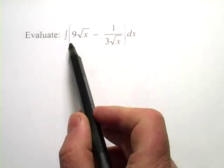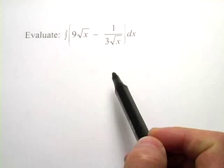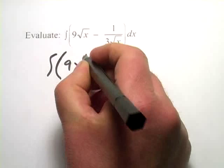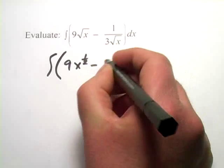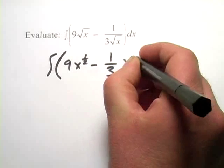Here we have the integral of 9 times the square root of x minus 1 over 3 times the square root of x. And I think the first thing that I would do is rewrite this as 9 times x to the 1 half minus 1 over 3 times x to the negative 1 half.